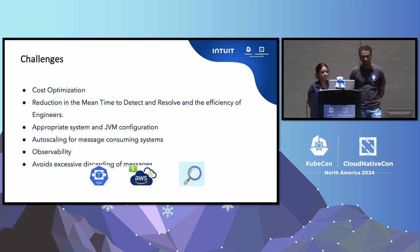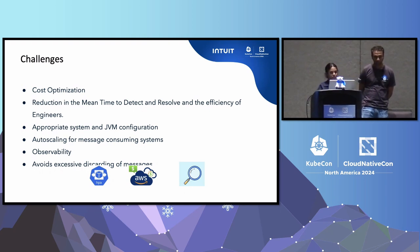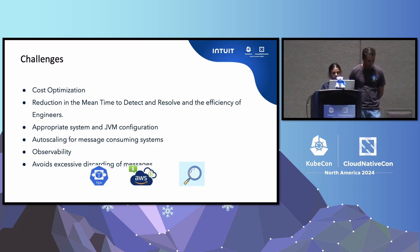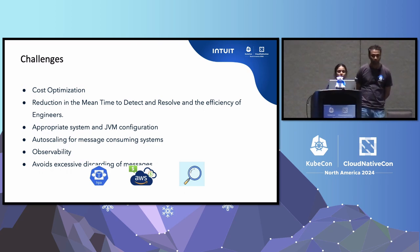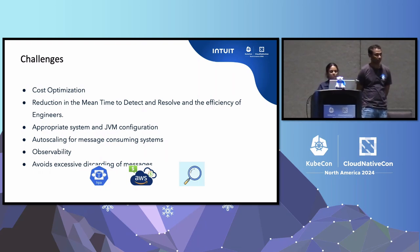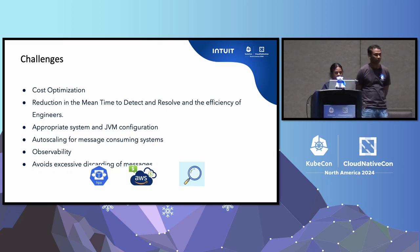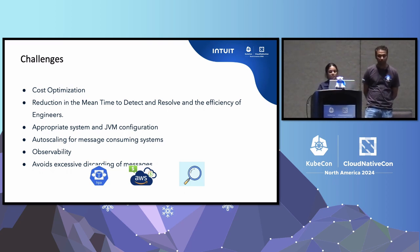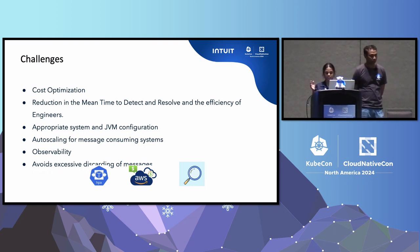Here are the challenges we faced with our eventing systems. We were not able to optimize cost effectively, as our auto-scaling mechanisms lacked the ability to scale based on incoming messages. We lacked observability for messaging traffic, which increased mean time to detect and resolve. We had region-based JVMs and databases, so we had to discard messages heavily, as we did not have the ability to forward messages to the intended databases.